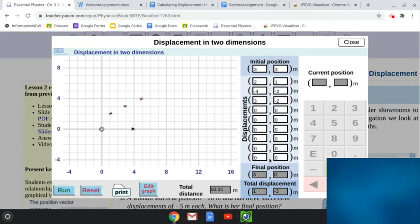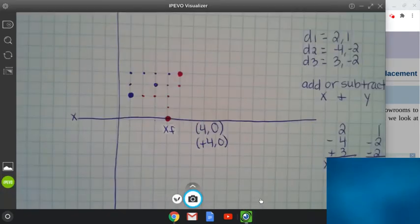Down here, we have 4, 0. That's our position in respect to the XY plane. And then down here, our total displacement is going to be 1, negative 3. So let's go back to this and see how we did.